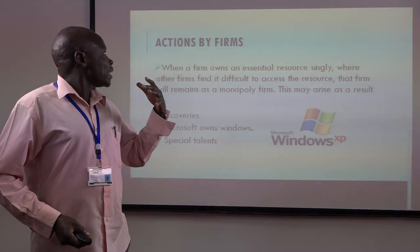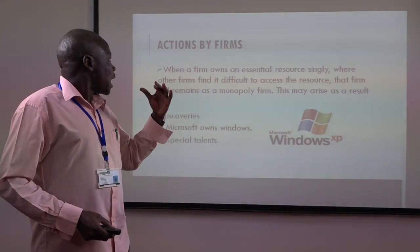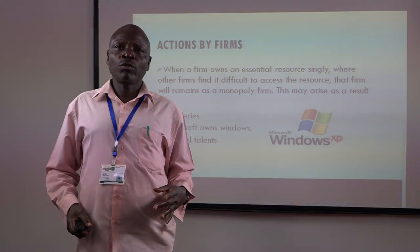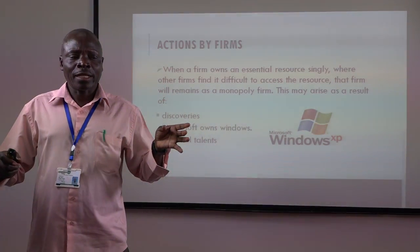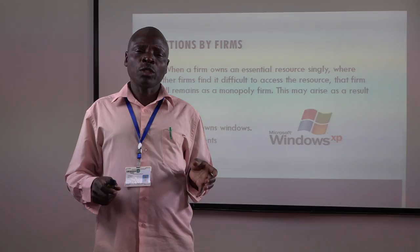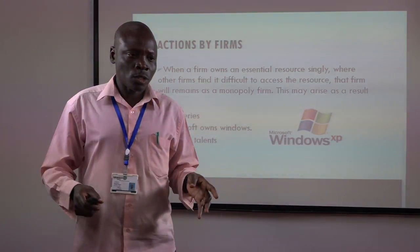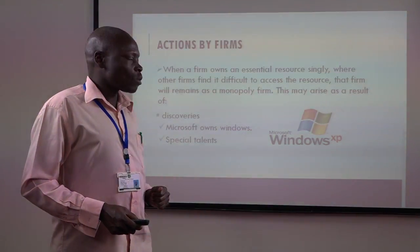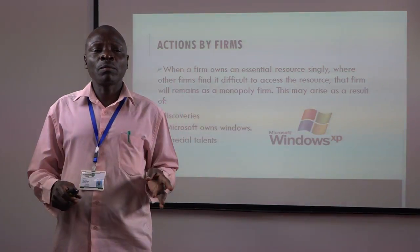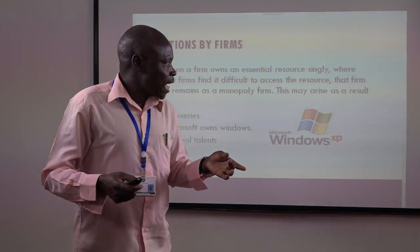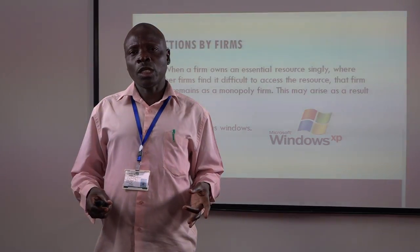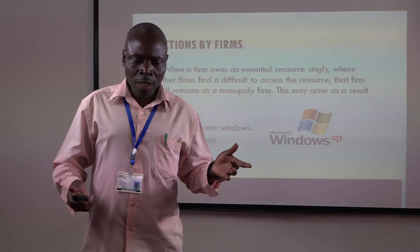Then we look at actions by firms. When a firm owns an essential commodity, other firms will be unable to get that essential commodity, and this firm will enjoy monopoly status because other firms will not be able to have access to this particular resource. Take the example of Microsoft Windows — no other firm can access Microsoft Windows, which gives them that monopoly power. Actions by firms are caused due to discoveries; when a firm discovers a particular essential commodity, others will not be able to join that industry.